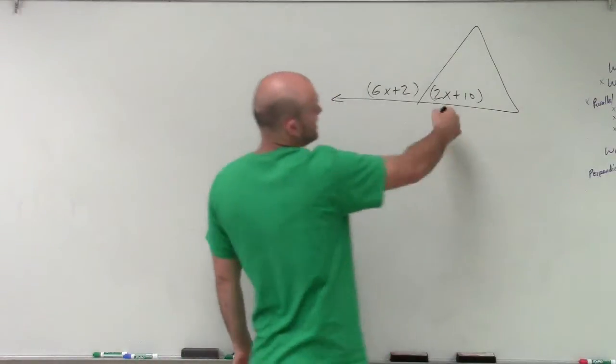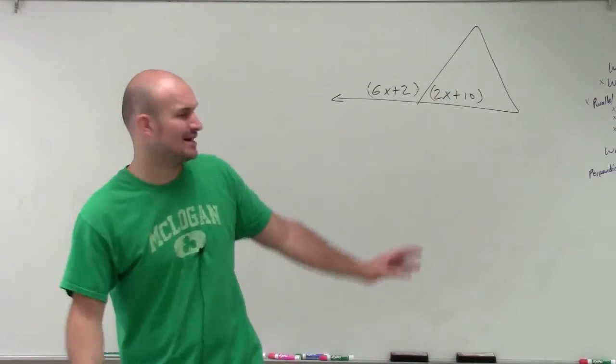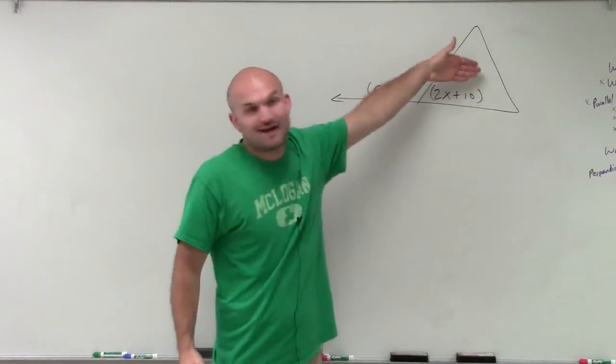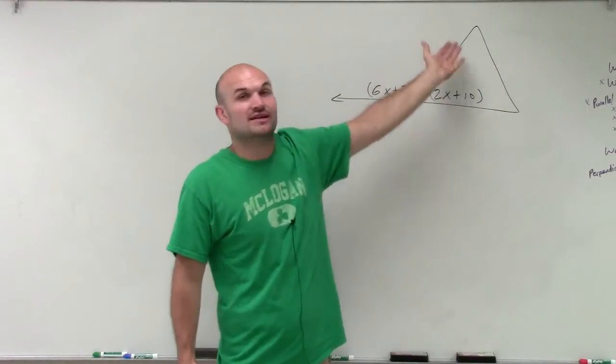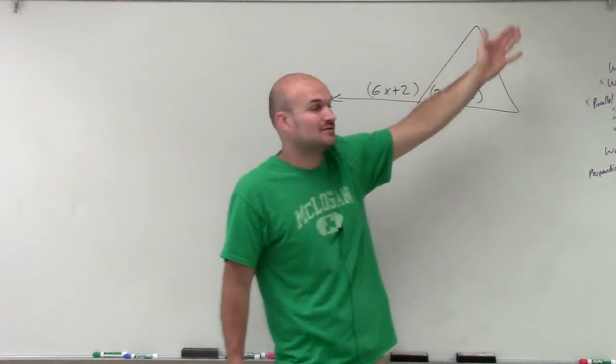Now, we notice that we have a triangle. And all the angles inside of a triangle add up to 180. But unfortunately, we only have one angle, and we're not given enough information to determine the rest of these angles.